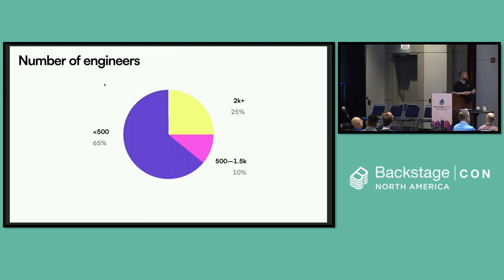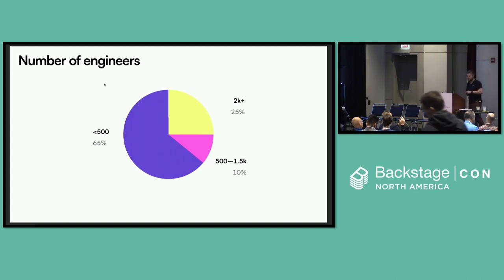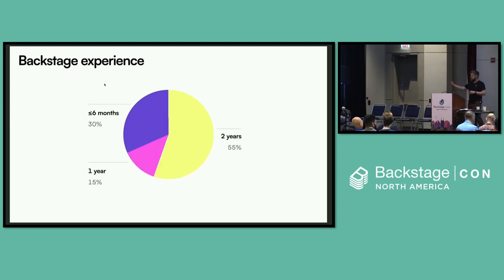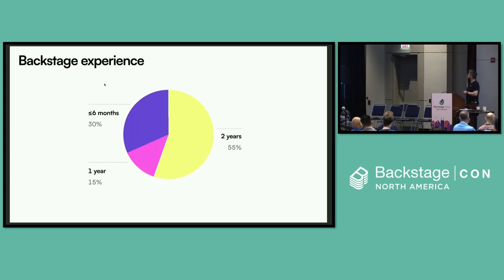In terms of demographics, most of the companies were less than 500 engineers in size — the smallest was 80. There were a good few in the 100 to 250 engineer range, and some 500-engineer companies. We had two companies in the 500 to 1,500 range and five companies who were 2,000 or larger — pretty big enterprises. I did 26 or 27 interviews in total, discarding some who were really only getting started. The point is to learn how to adopt Backstage, not just deploy it. A lot of people had two or more years of experience, including some of the earliest adopters.